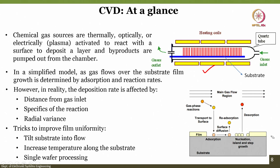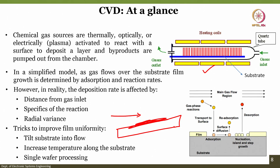In a simplified model, as gas flows over the substrate, film growth is determined by adsorption and reaction rates. In reality, the deposition rate is affected by radial variance, specifics of the reactions, and distance from the gas inlet. To improve uniformity: you can tilt the substrate into the flow, increase temperature along the substrate, and use single vapor processing — if you have one vapor you get better deposition.